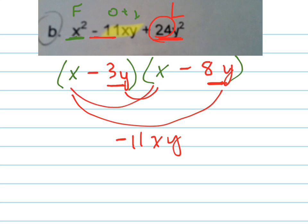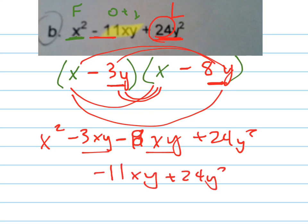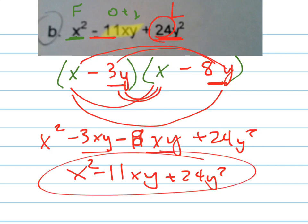First: x squared. Inside: negative 3xy. Outside: negative 8xy. Last: positive 24y squared. These add up to negative 11xy, so that works. We checked it and it works. That's how you factor.